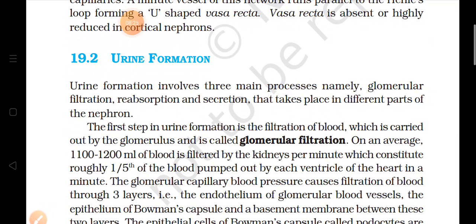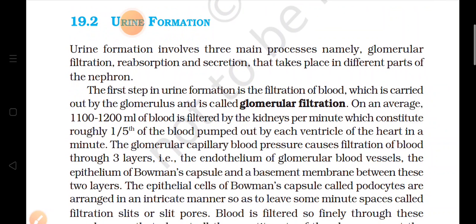The function of the kidney is to form urine through three main processes: glomerular filtration, reabsorption, and secretion. The kidney filters blood at a rate of 1100 to 1200 ml per minute — that is one fifth of the blood pumped out by each ventricle of the heart per minute. Because metabolism produces nitrogenous waste such as uric acid, filtration of blood is necessary and is carried out by the glomerulus — this is glomerular filtration.